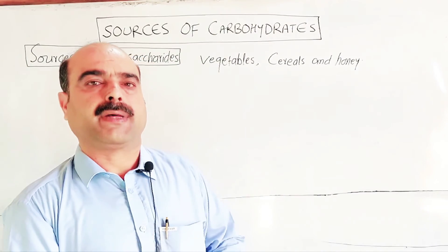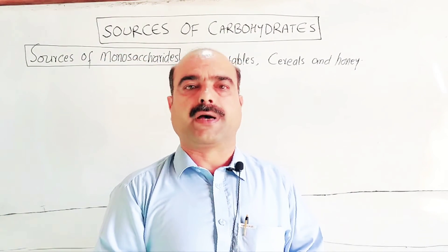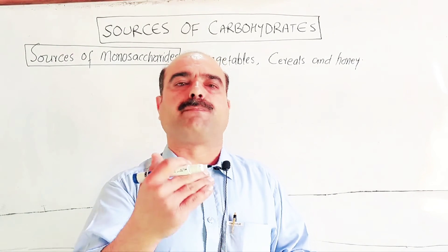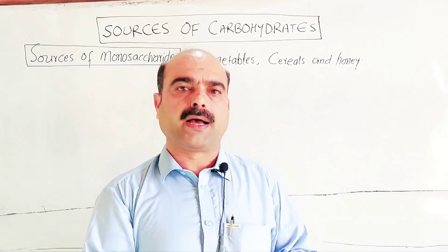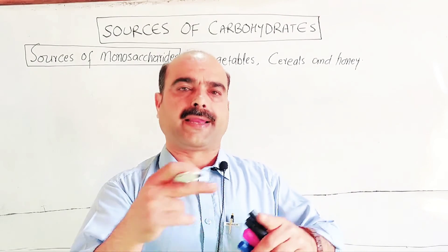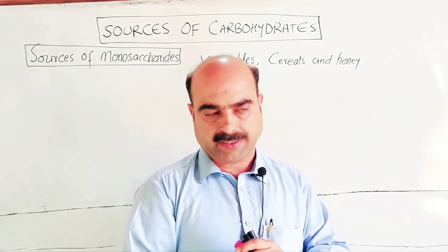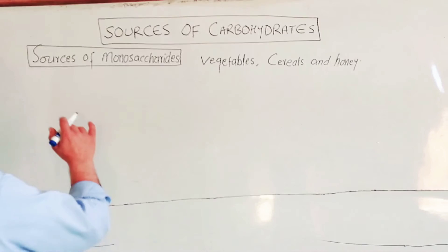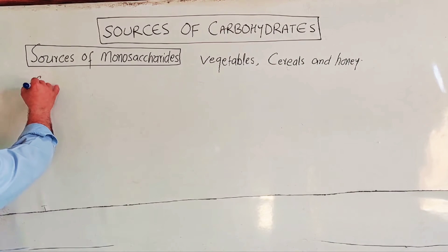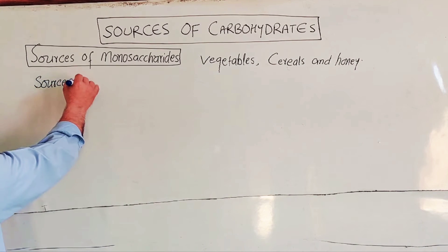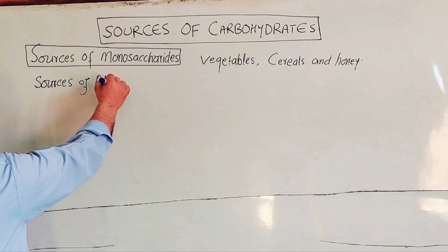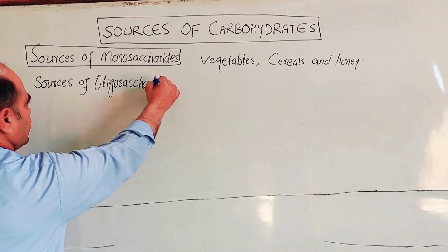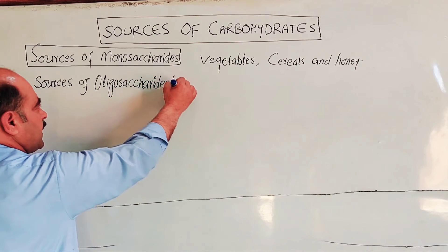This includes a lot of grains such as wheat, rice, and other cereal crops. The ingredients include cells and grains. Fruits and vegetables, including beans, are also important sources of monosaccharides.